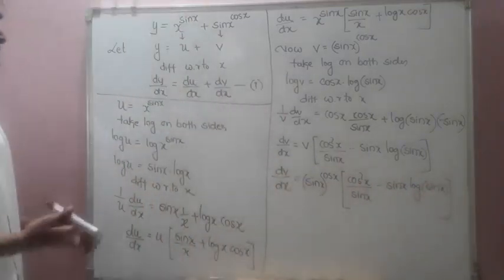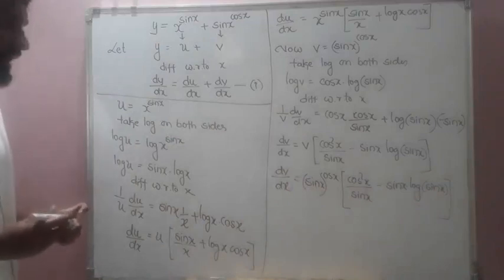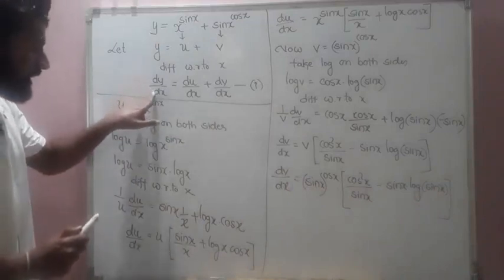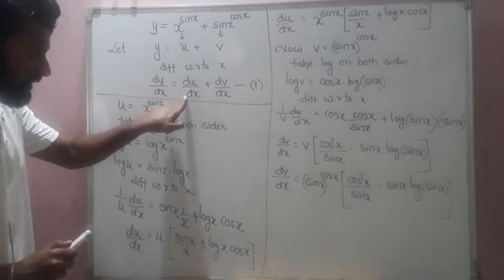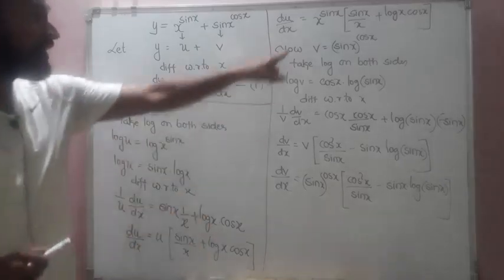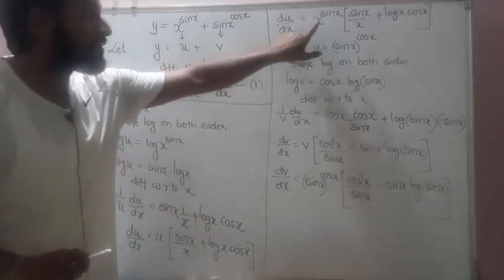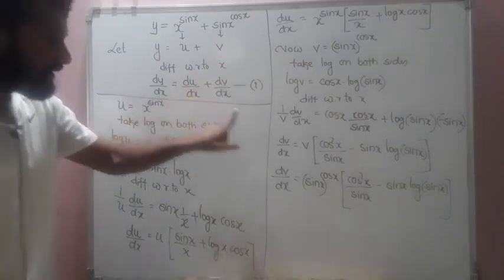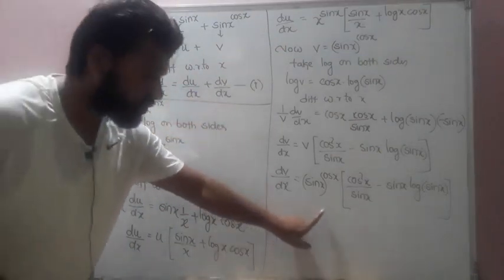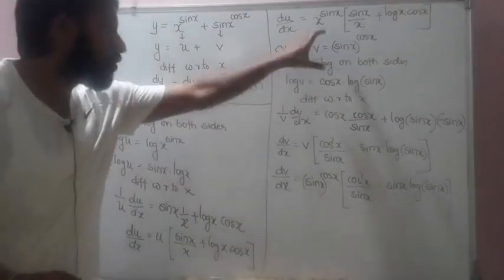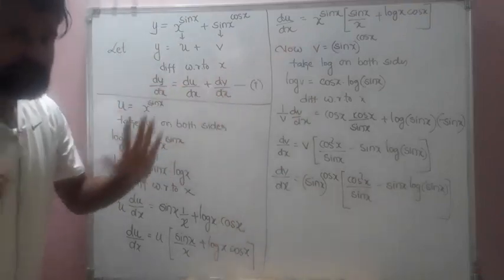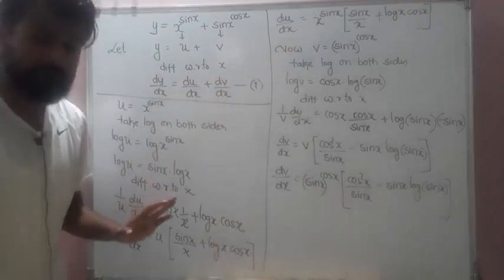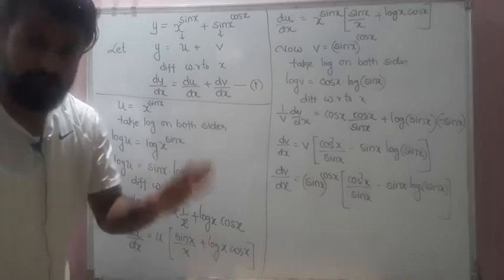In the last step, dy/dx = du/dx + dv/dx. We substitute the answers we found for both du/dx and dv/dx into equation 1 and that is our final answer. If this question comes in the exam, it will be a 5-mark question.